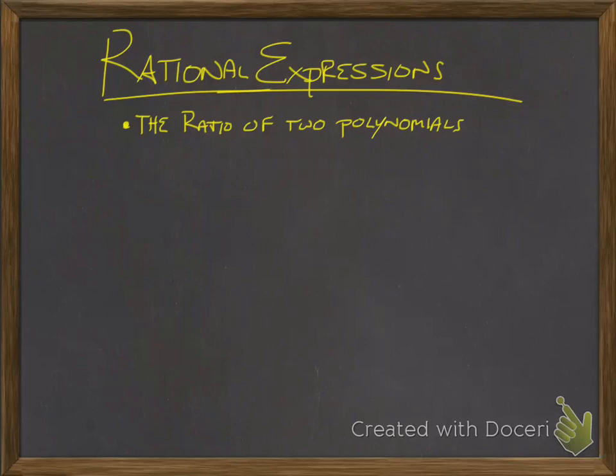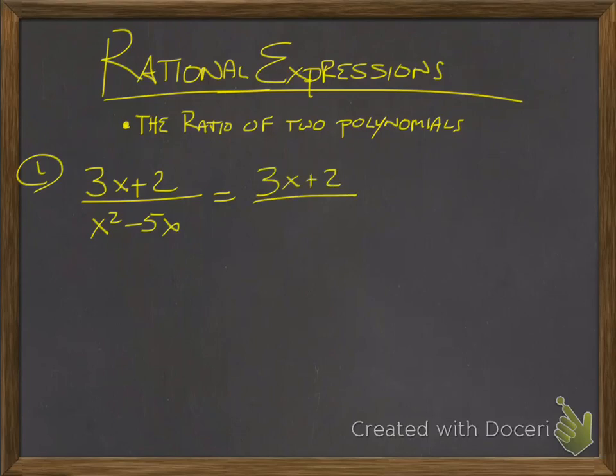We've talked about this before, but just want to go back to, when you have a rational expression, you have restrictions on the variable, what the variable cannot equal, and that comes from the denominator. The denominator cannot equal zero. So for this one, what you would do to find the restrictions is factor the denominator.